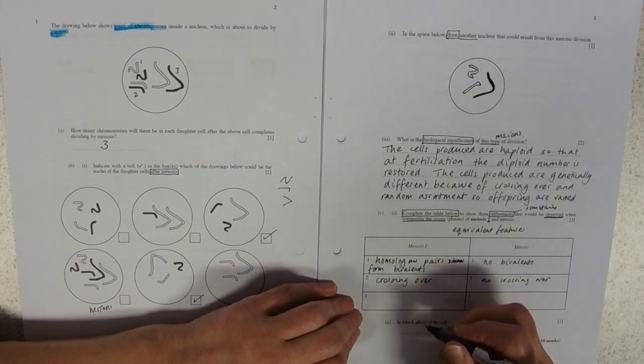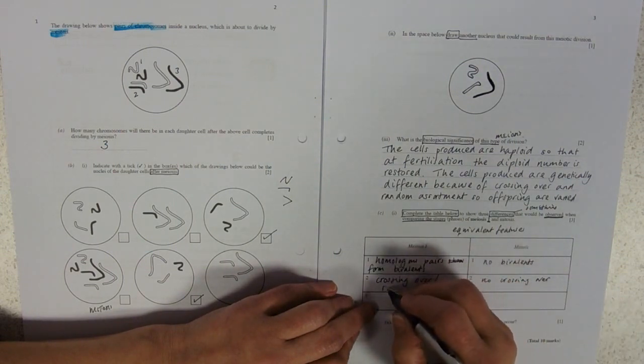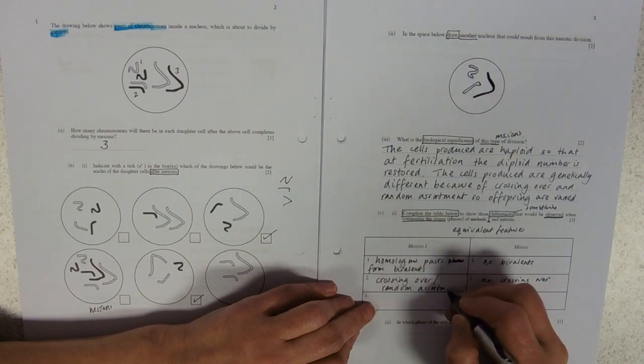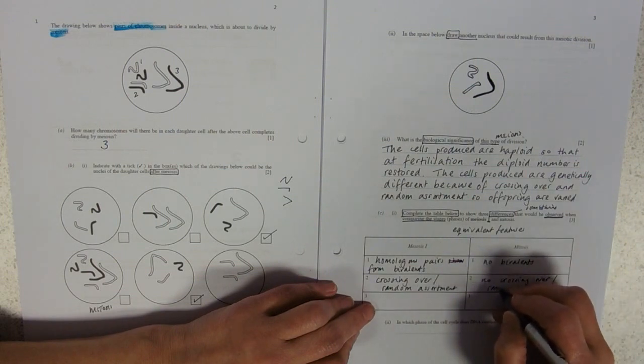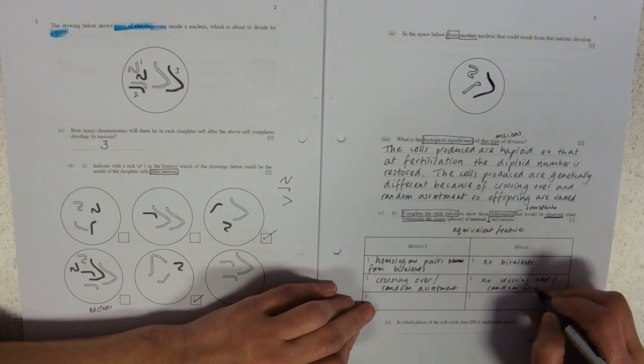I could go on to say random assortment, but I'm thinking, well, I'm going to put that in there because they're sources of variation. No crossing over or random assortment. No crossing over or random assortment. What else do I know?